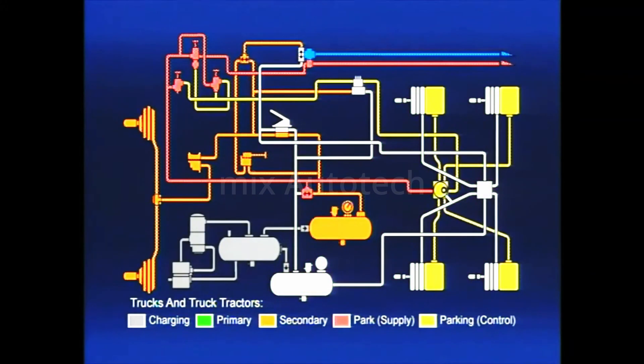If rear axle air pressure is lost, the driver will be warned, and the shuttle in the double check valve will move to allow the front axle reservoir to supply the R14 relay valve and the PP1.